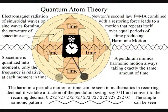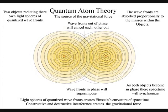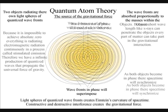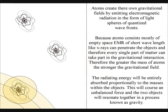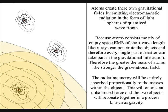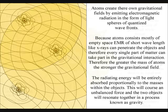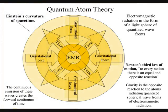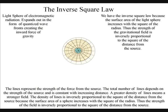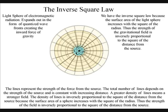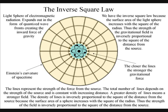When the light or electromagnetic radiation comes in contact with another object, it will be absorbed in proportion to the masses of that object. This will create an unbalanced force, and the two objects will resonate together in a process that we call gravity. Because atoms consist mostly of empty space, the electromagnetic radiation of short wavelengths, like x-rays, can penetrate the objects, therefore every single part of matter can take part in the gravitational interaction. The gravitational field will propagate at the same speed that the electromagnetic radiation moves, the speed of light, therefore there is no instantaneous action at a distance. We have the inverse square law, because the surface area of the light sphere increases with the square of the radius, thus the strength of the gravitational field is inversely proportional to the square of the distance from the source.